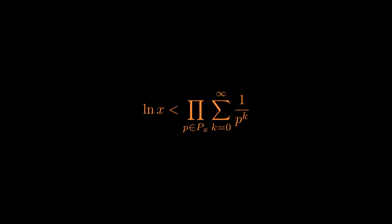So moving on, we see that we have an infinite geometric series in the right hand side which we can simplify as p divided by p minus 1.